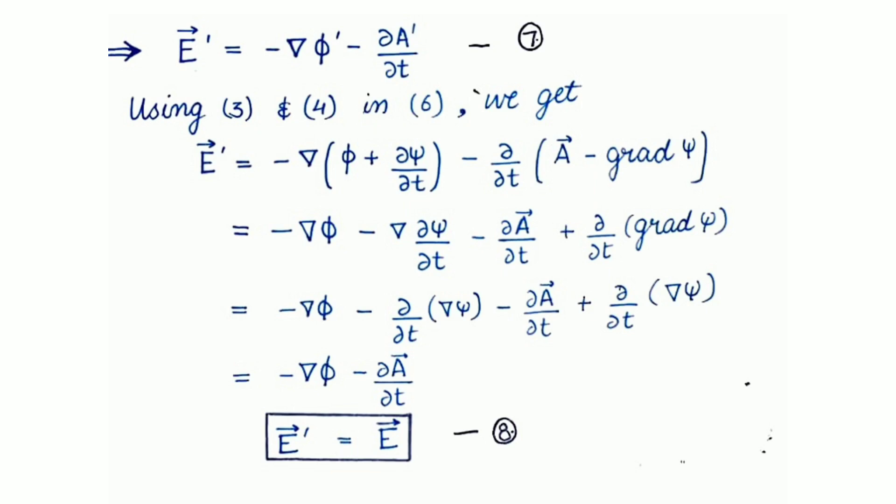Now, let's move to the electric field. Considering another electric field that is E dash, so it can be written as minus del phi dash minus curly A dash upon curly t. Again, here using those transformations and putting the values of phi dash and A dash here over it. So, we will get E dash is equals to minus del phi plus del psi upon del t minus curly A minus gradient of psi upon curly t. So, again using the distributive property, we will solve it and we will finally get this equation.